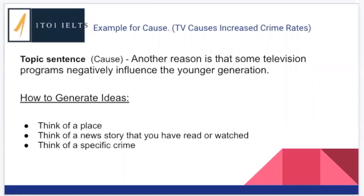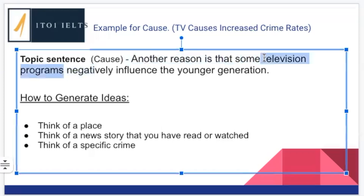One of the areas students struggle with when looking at examples is generating ideas. Anytime you need to write an example, think about how you can make it specific. Make sure it's related to the question and, most importantly, make sure it supports your main idea. The topic sentence we're looking for an example for in our cause paragraph is: 'Another reason is that some television programs negatively influence the younger generation.' A good idea when generating examples is to look at the key words — we're talking about television programs, they have a negative influence, and we're dealing with young people.